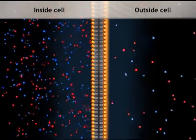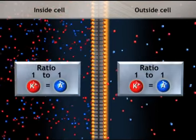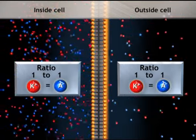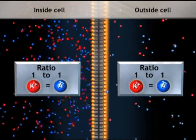Despite the difference in salt concentration, the ratio of potassium ions to anions on each side of the membrane equals 1, and the membrane potential is equal to 0 millivolts.